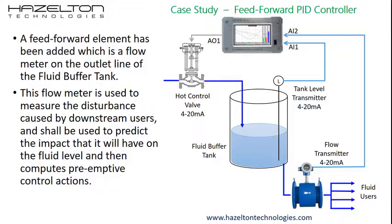In contrast, a feedforward controller measures the disturbance while it is still distant. As shown here, a feedforward element has been added which is a flow meter on the outlet line of the fluid buffer tank. This flow meter is used to measure the disturbance caused by downstream users and shall be used to predict the impact that it will have on the fluid level and then compute pre-emptive control actions. The goal is to maintain the fluid level to the controller set point value throughout the disturbance event.